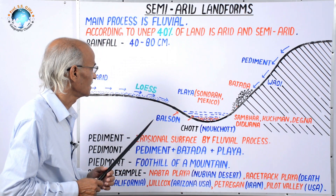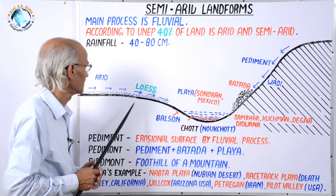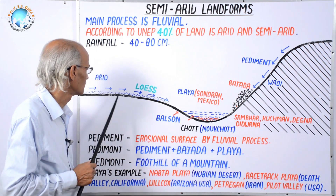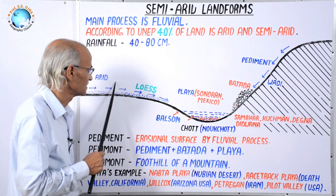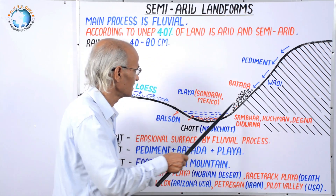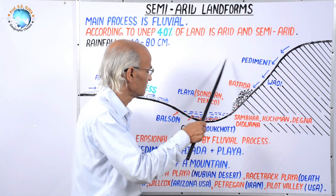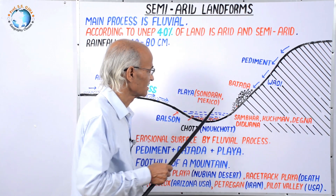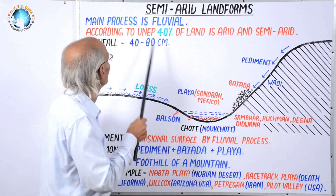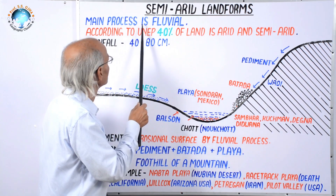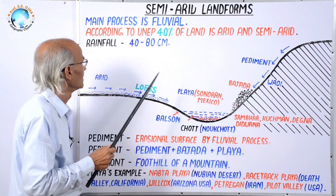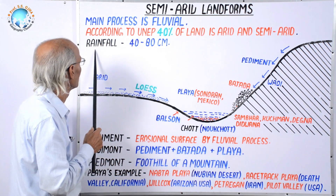In hot deserts there is an arid region where wind causes aeolian process. Just in the vicinity of arid is a semi-arid region. But in the semi-arid region, it is not the aeolian process that is so active. Rather, it is fluvial process — the main process in semi-arid region — because this area experiences some amount of rainfall.